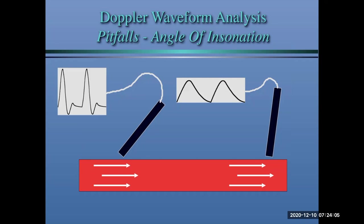You'll see reports that say 'monophasic in the dorsalis pedis artery bilaterally' on every patient, which is impossible — it just doesn't make sense. The reason is that the technologist or physician didn't use the proper angle of insonation, resulting in a falsely monophasic waveform. This applies to handheld Doppler too — you'll notice flow seems okay, then you change your angle and it either normalizes or becomes completely abnormal. You have to be very careful in your assessment.